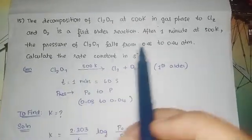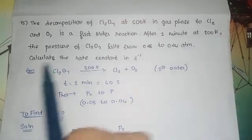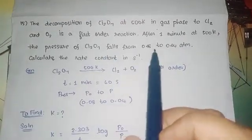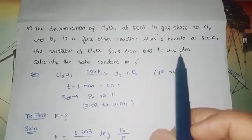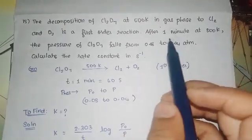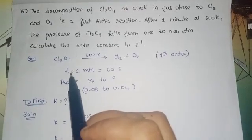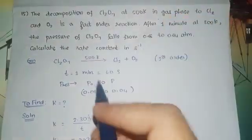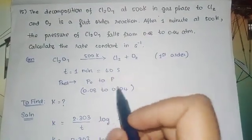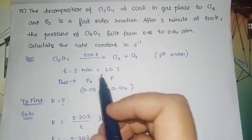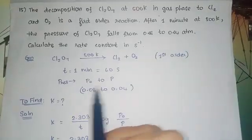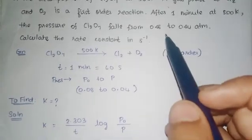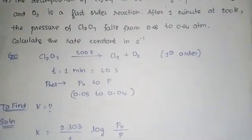After one minute at 500 Kelvin, the pressure of Cl₂O₇ falls from 0.08 to 0.04 atm. Time is given as 1 minute. We will convert it into seconds because that is the standard unit. So 1 minute is equal to 60 seconds.